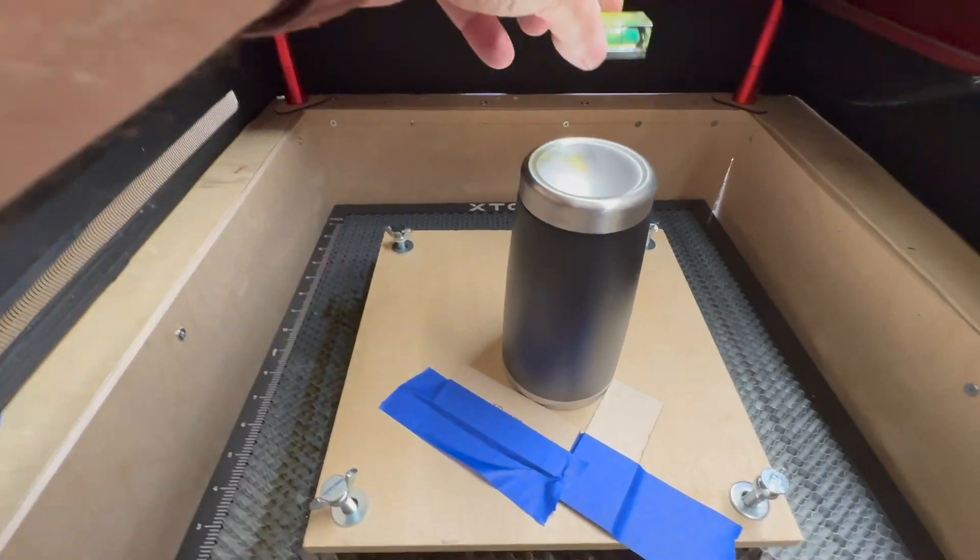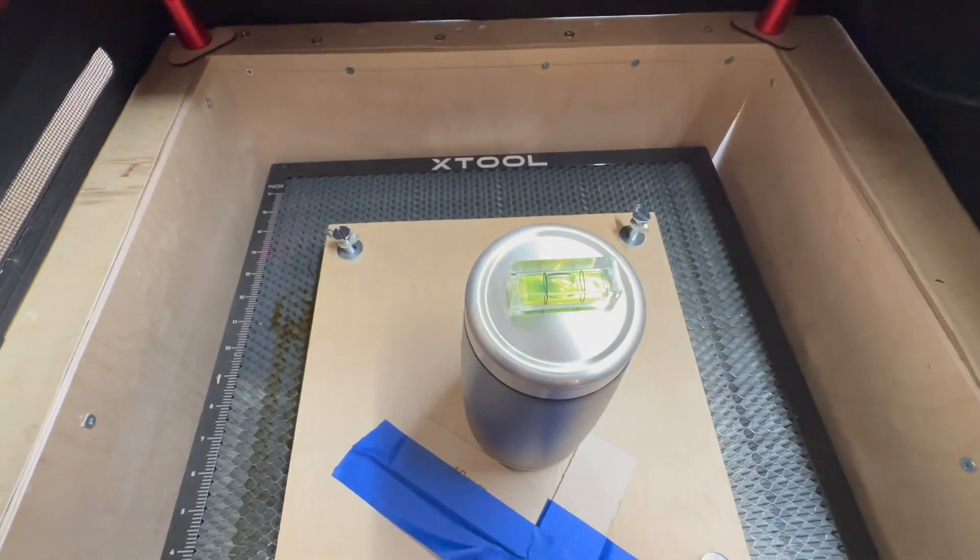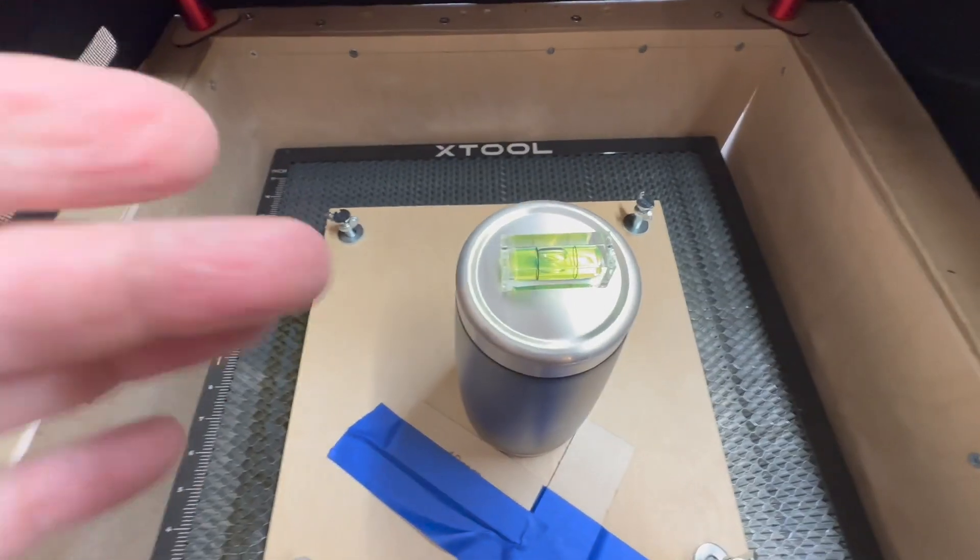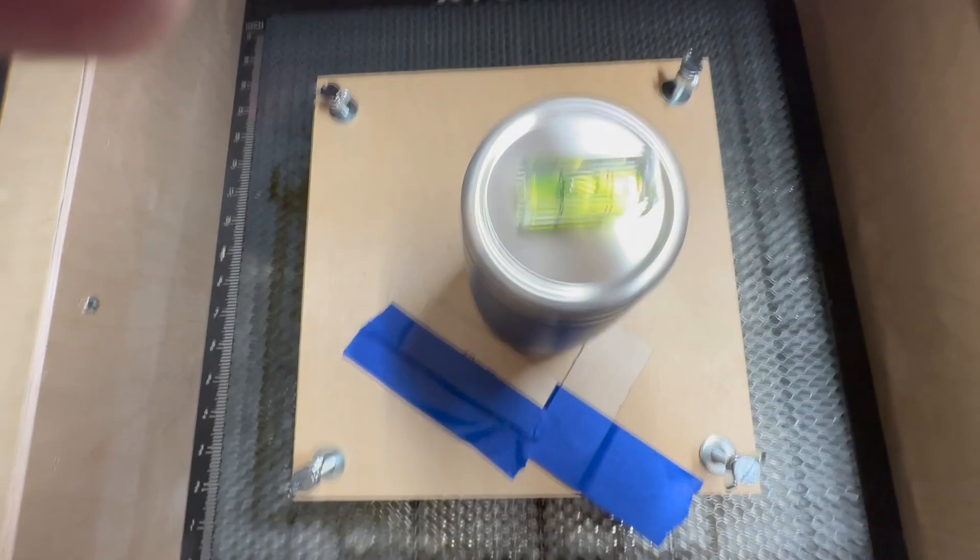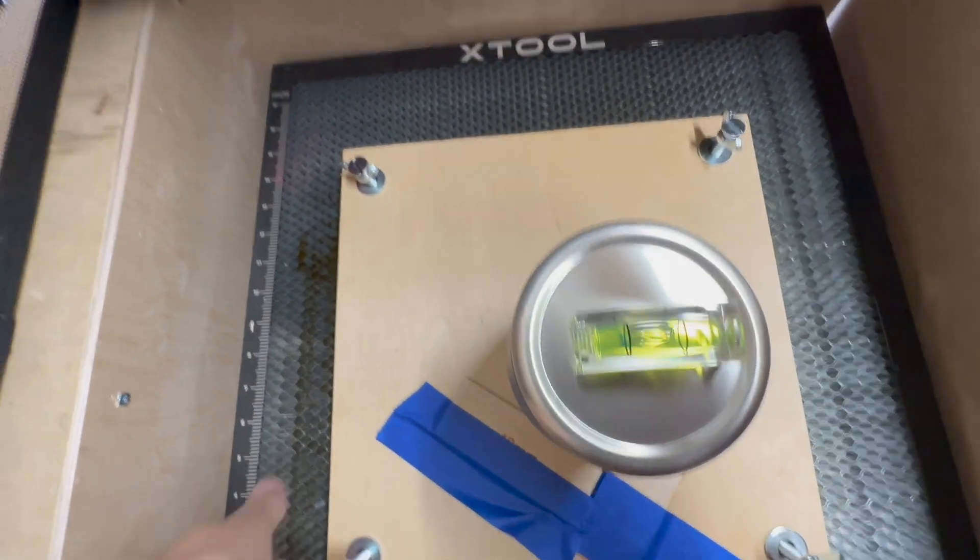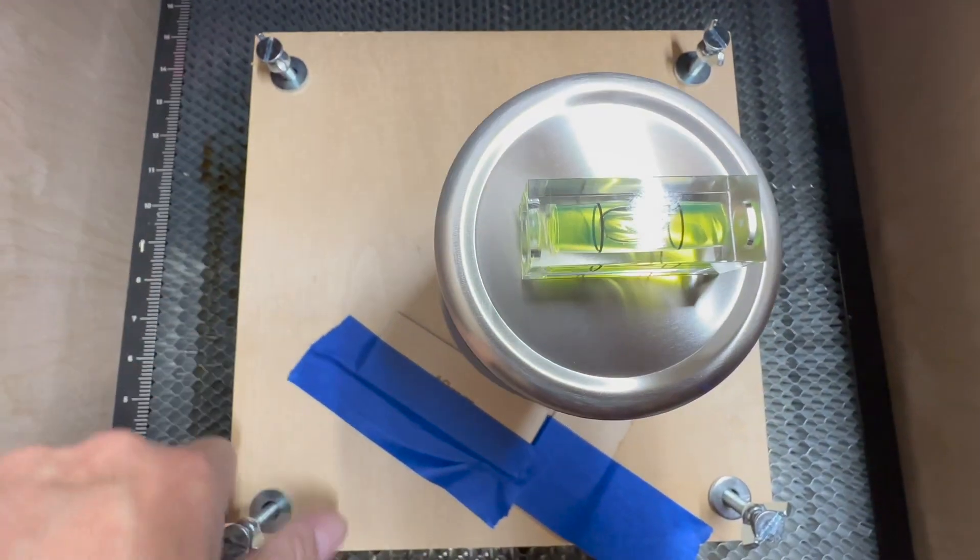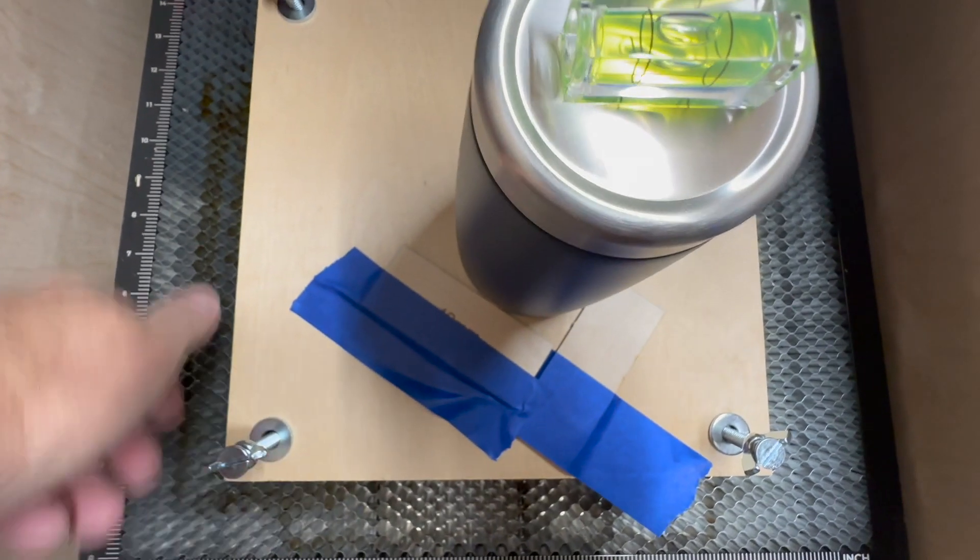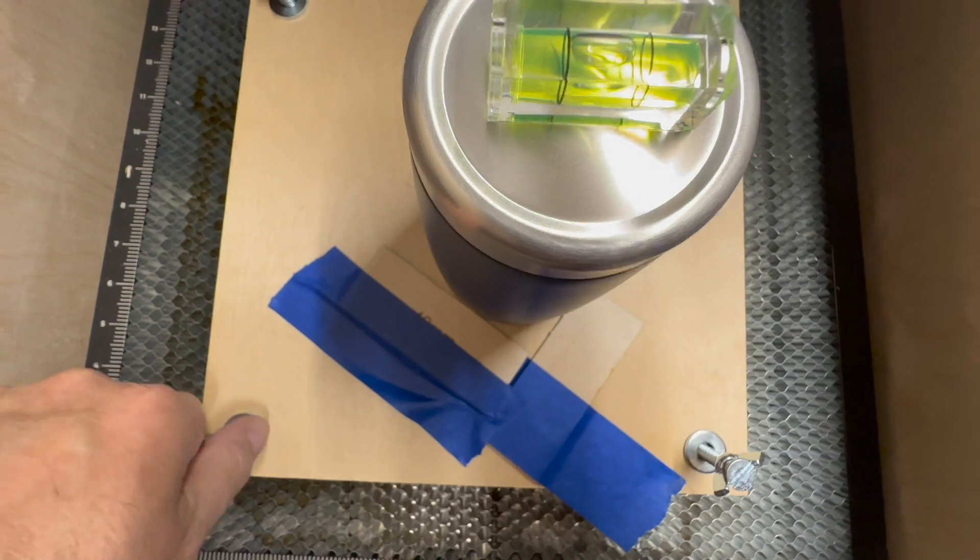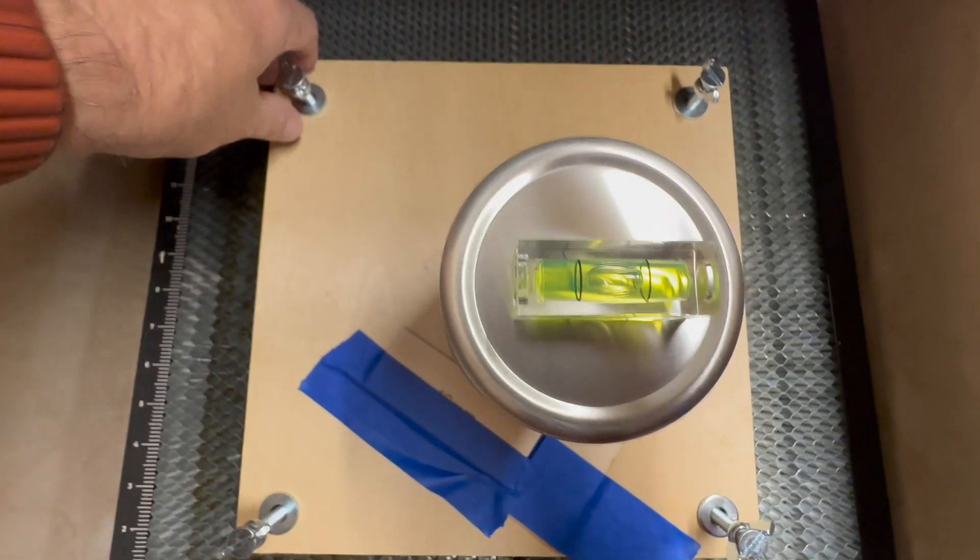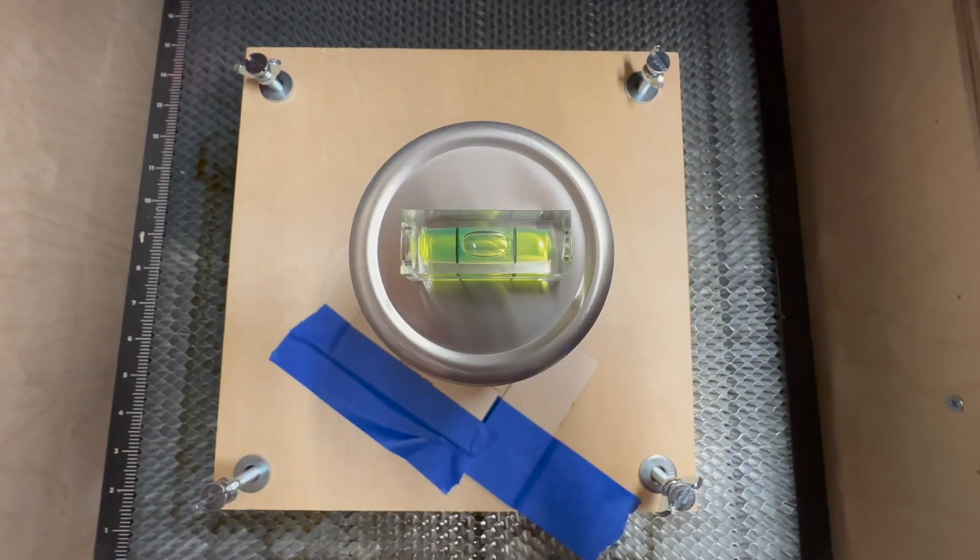And so I'm able to put my little level on there and I find that each one of these tumblers is a little bit different. So what I need to do here is lower a bit. And as I turn those screws, then I get level.